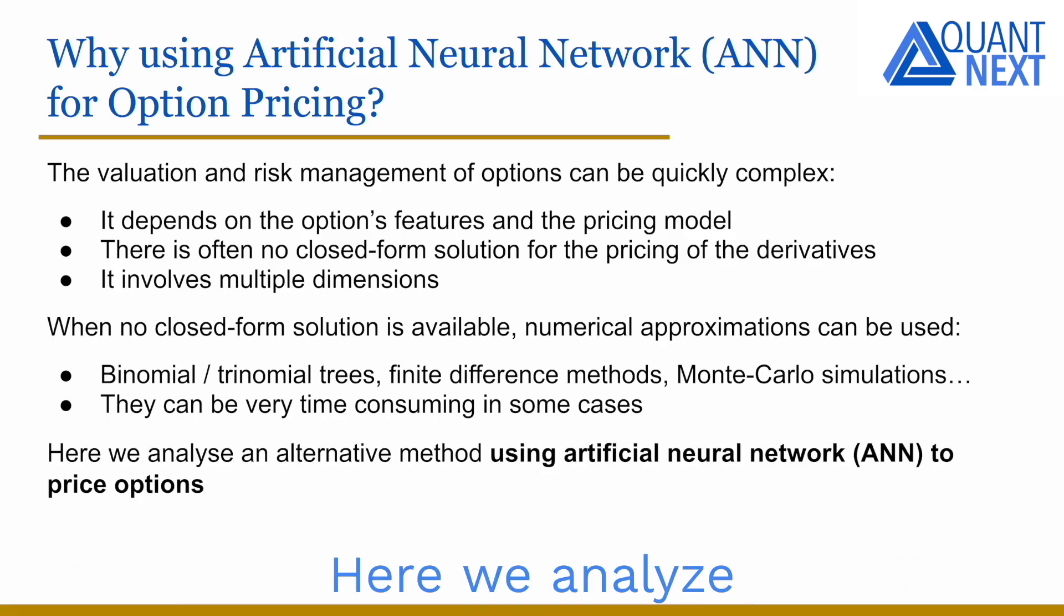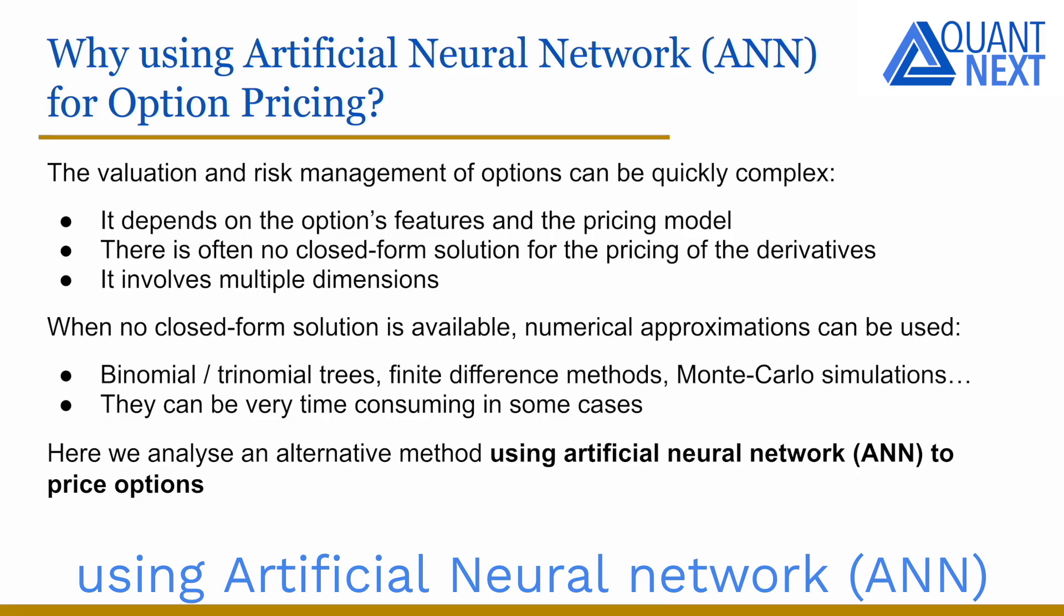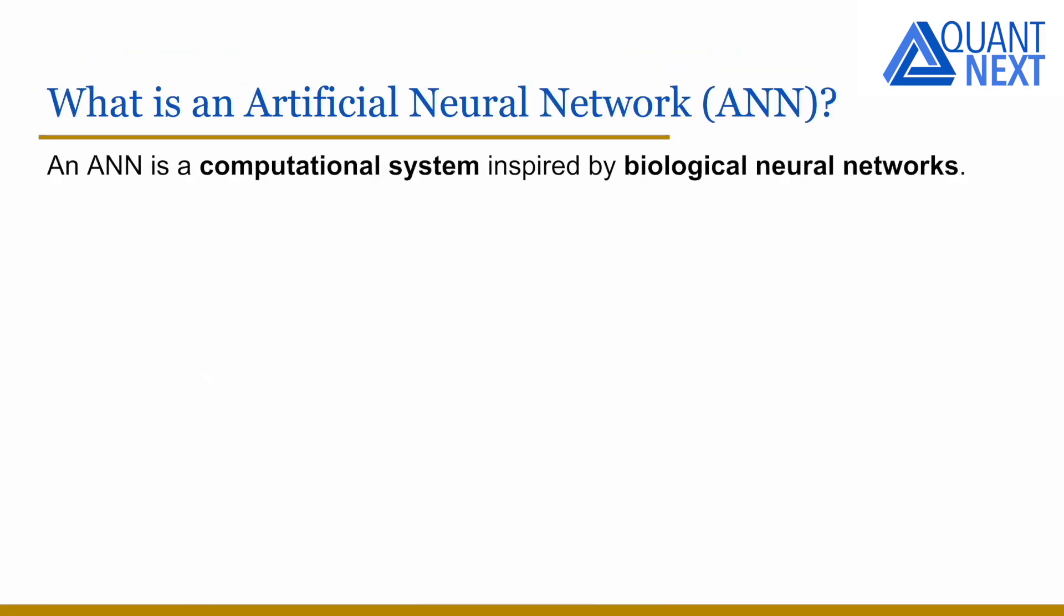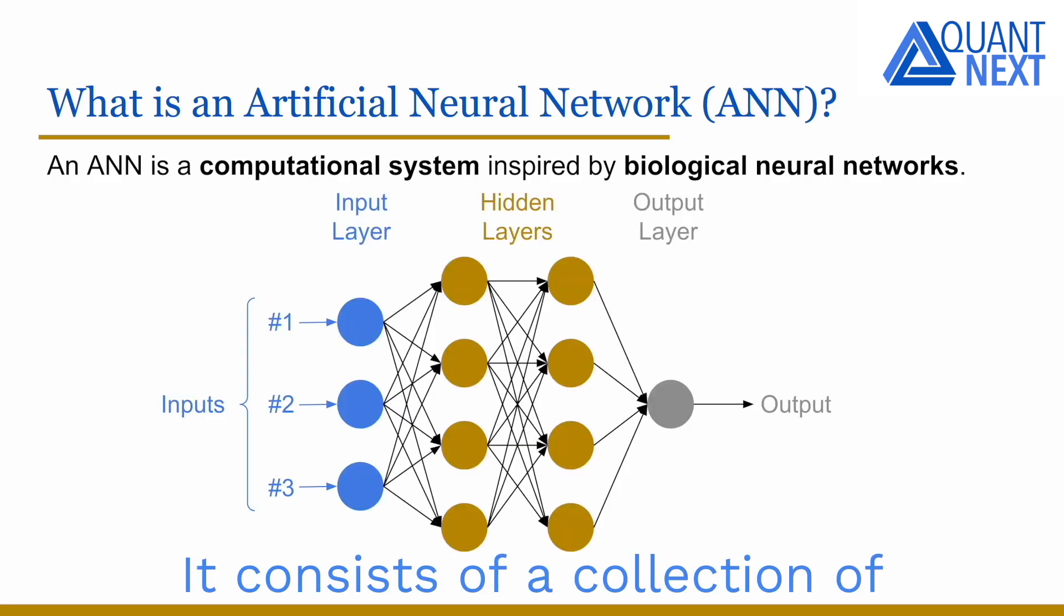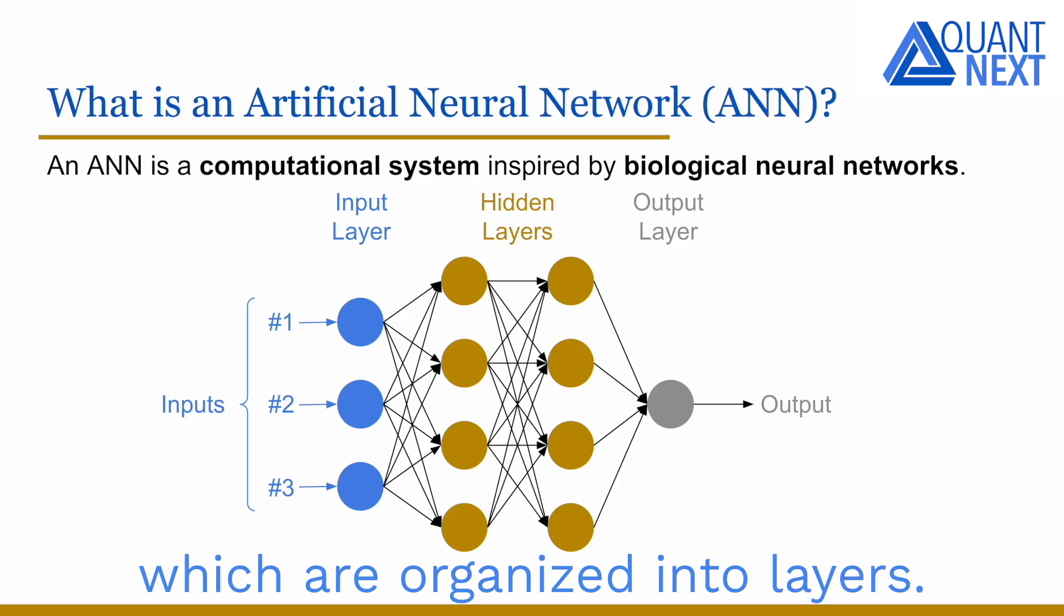Here we analyze an alternative method using artificial neural networks to price options. An artificial neural network is a computational system inspired by the biological neural networks found in animal brains. It consists of a collection of interconnected nodes, called neurons, which are organized in layers.